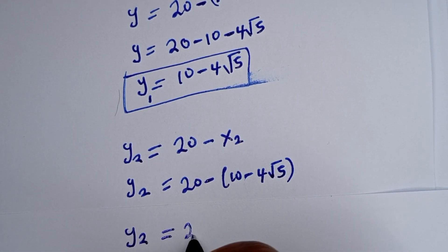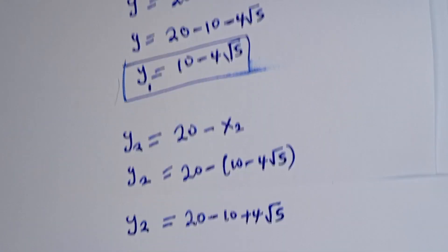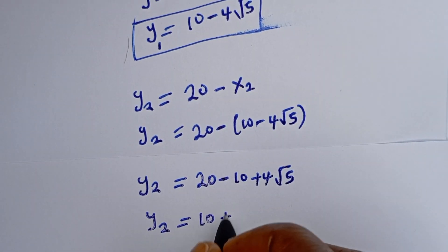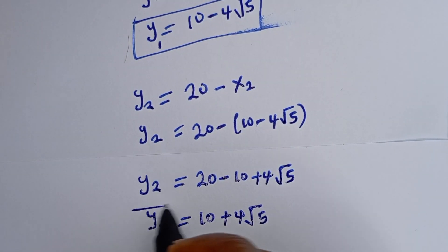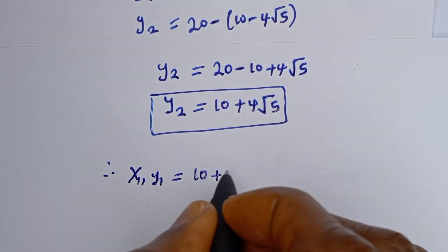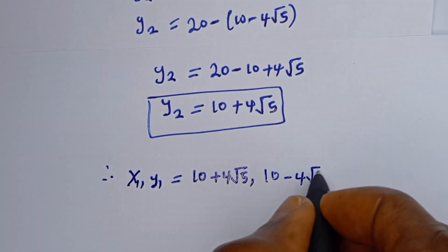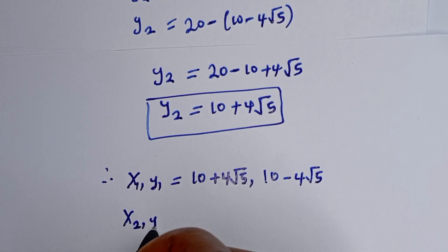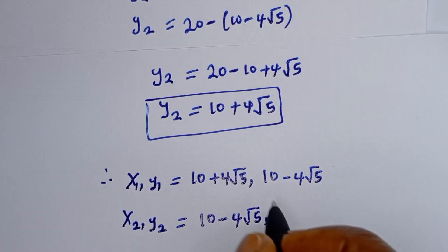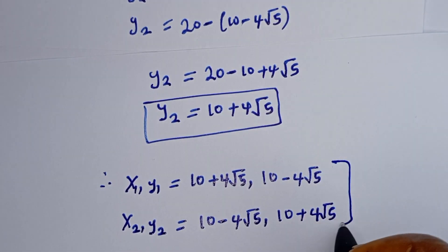When S2 is equal to 10 minus 4 root 5, Y2 is equal to 20 minus bracket 10 minus 4 root 5, which gives Y2 is equal to 10 plus 4 root 5. Therefore, S1 comma Y1 is equal to 10 plus 4 root 5 comma 10 minus 4 root 5, and S2 comma Y2 is equal to 10 minus 4 root 5 comma 10 plus 4 root 5. This is the final answer.